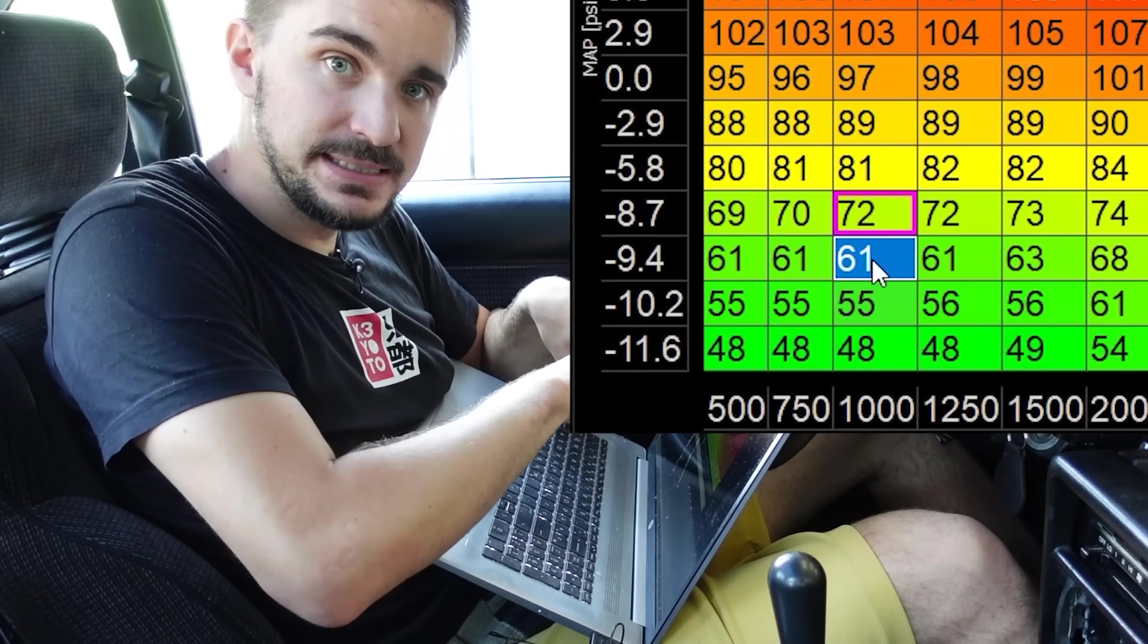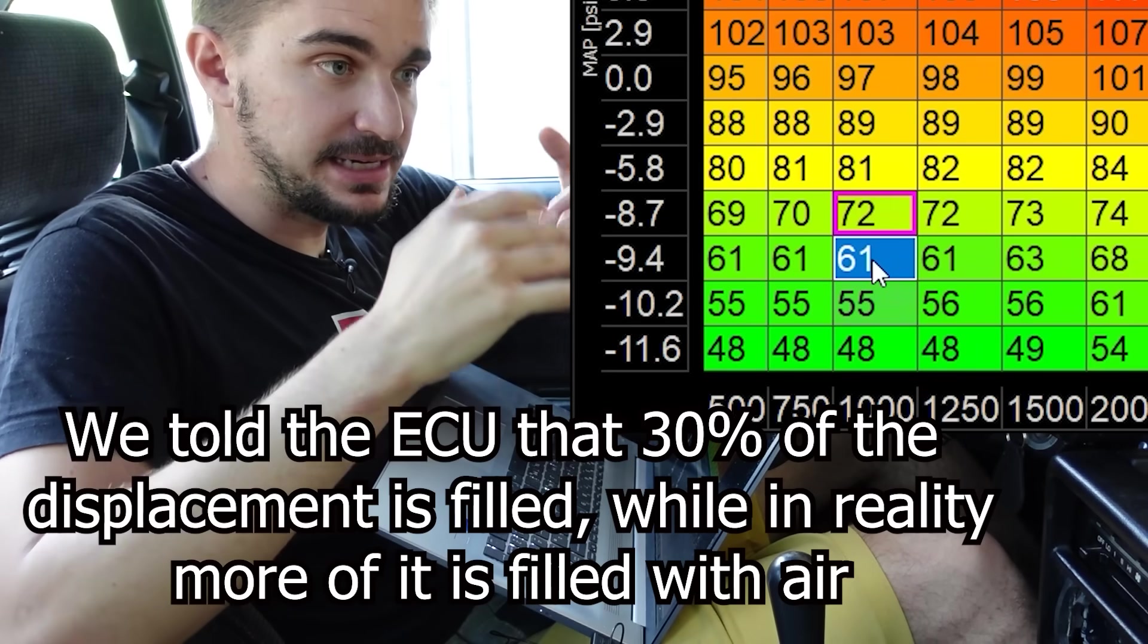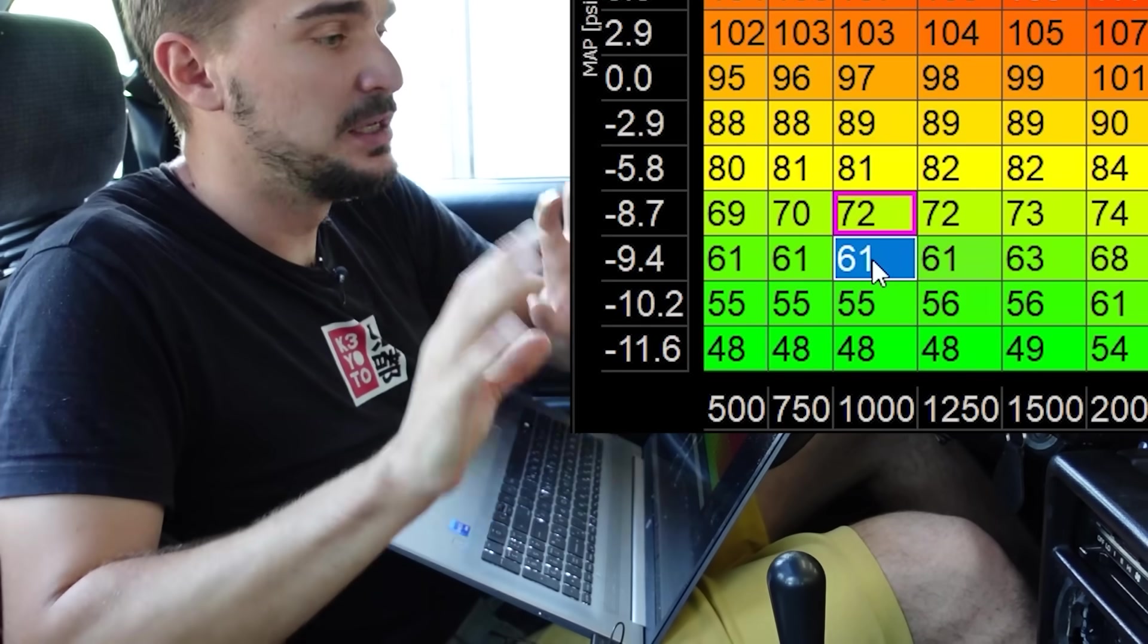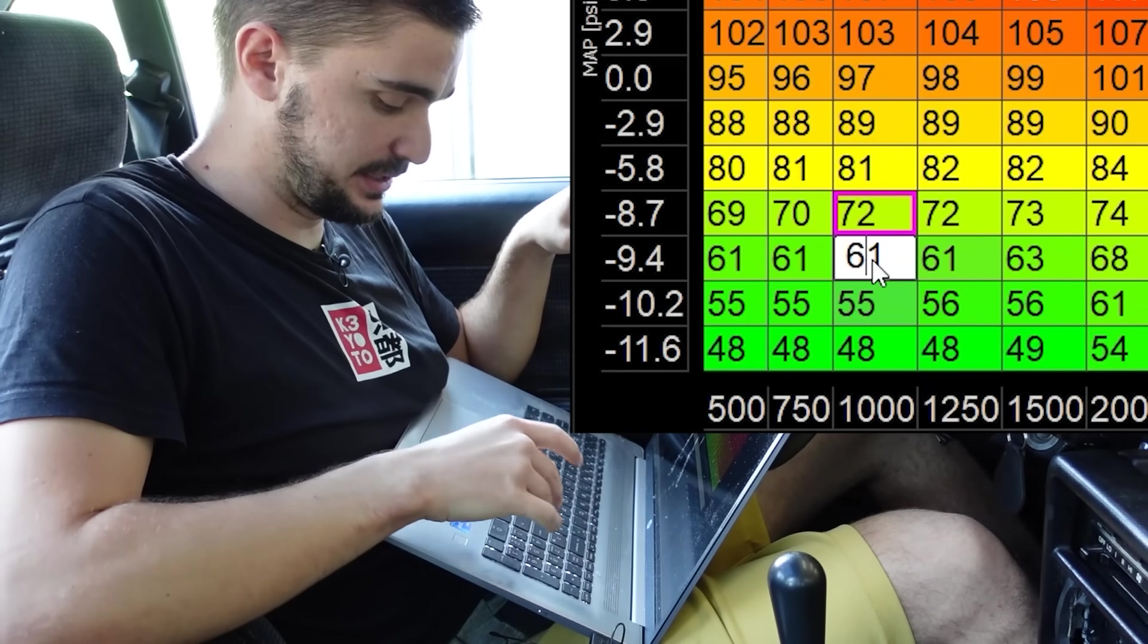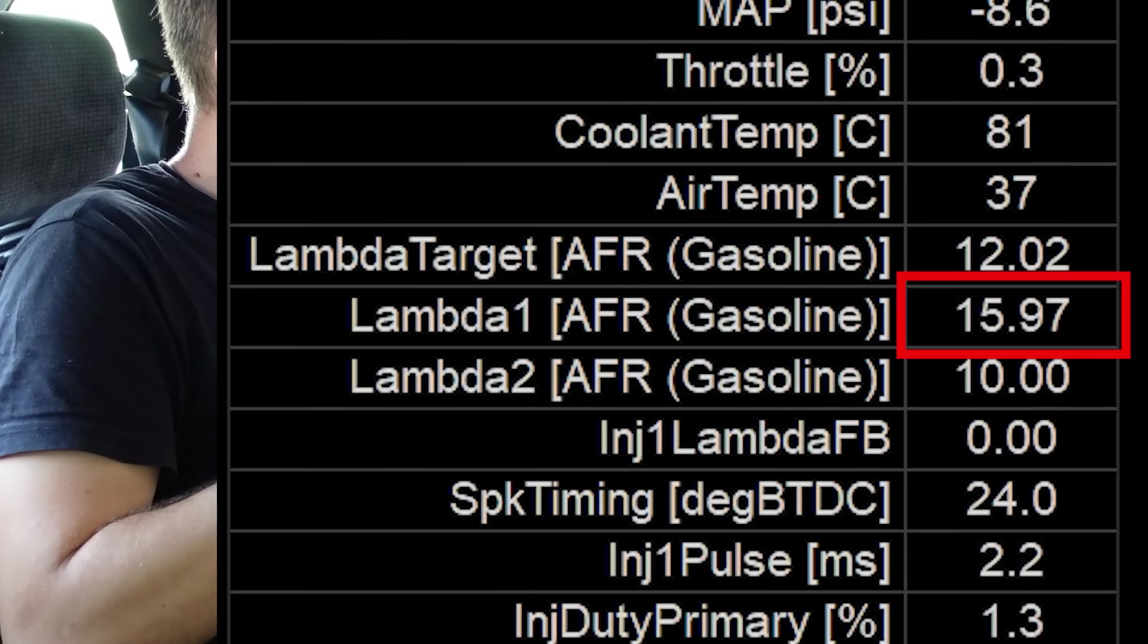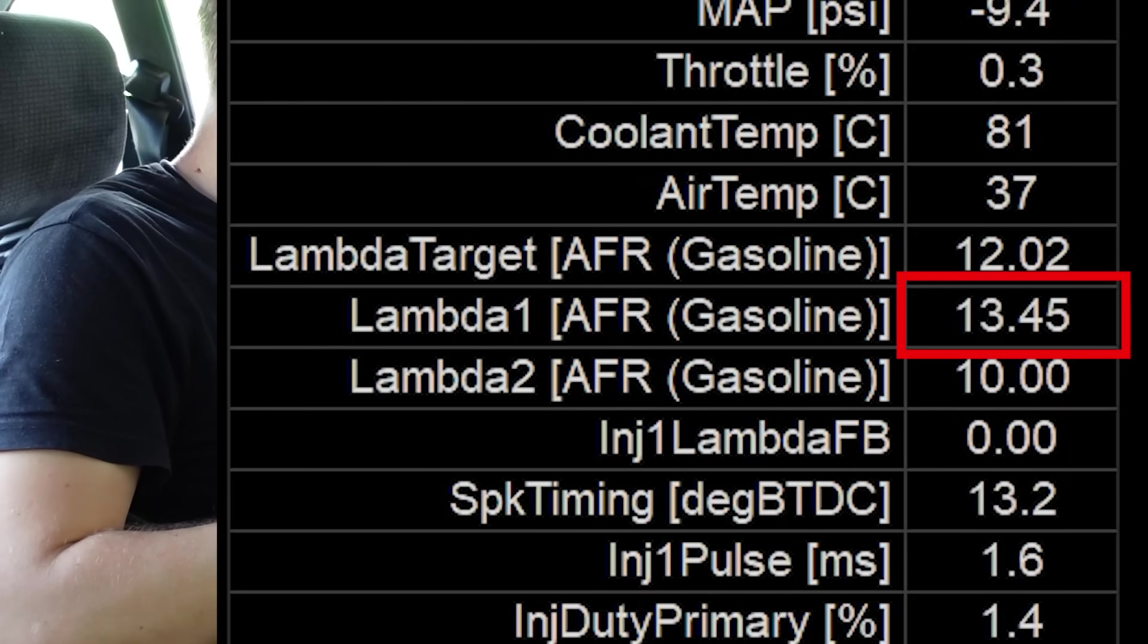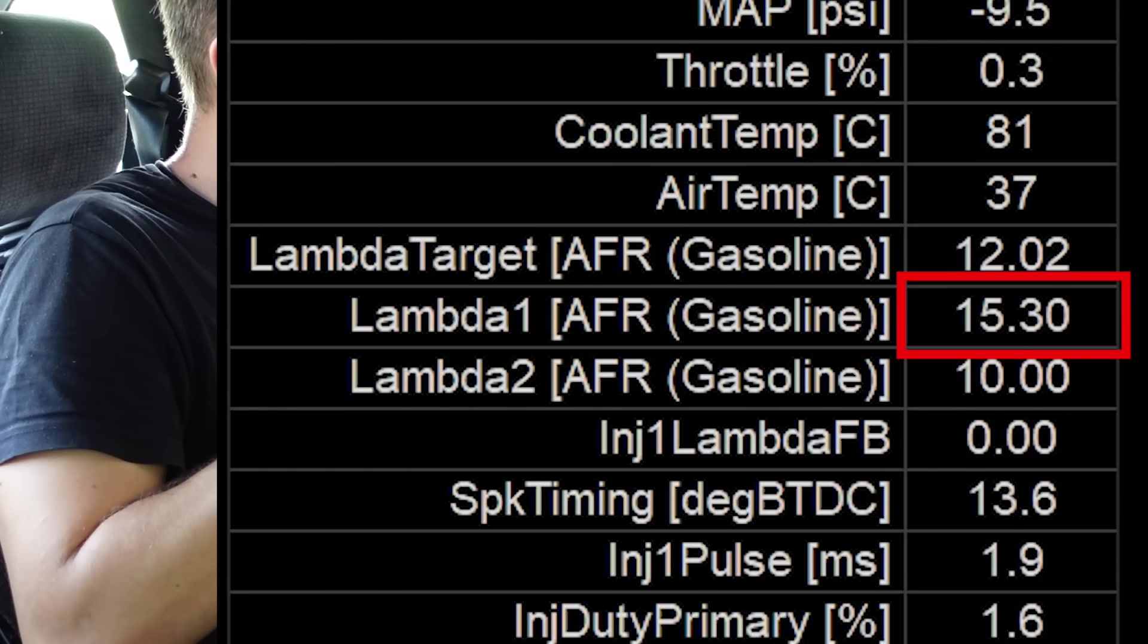The question is why did this happen? Well it happened because we told the ECU that there is less air coming in the engine than there actually is air coming into the engine. There is more air coming into the engine than 31% of the displacement. But we told the ECU it's 31. So the ECU adjusted, it added less fuel. And as you can see again in the software, it's there again so you can see it.